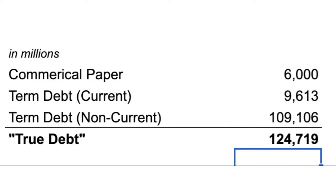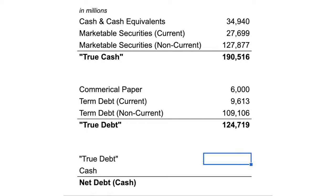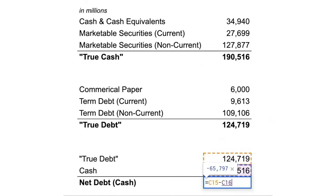Understanding a company's debt is pivotal in assessing its financial health. Let's go one step further by calculating net debt — simply subtract the company's cash from its total debt to reveal the net amount it can't pay off immediately. For Apple, the result is negative $65,097 million. This means Apple theoretically has no net debt because its cash reserves exceed its total debt. At first glance, that $124 billion debt figure looks concerning, but when you realize Apple holds $190 billion in cash, suddenly that debt doesn't seem worrisome at all.